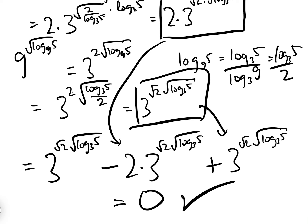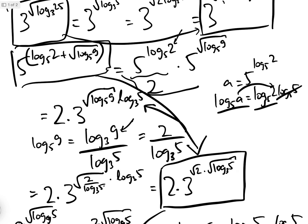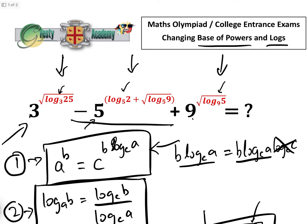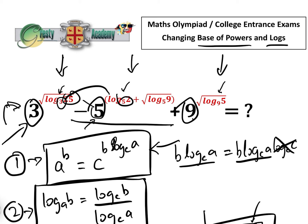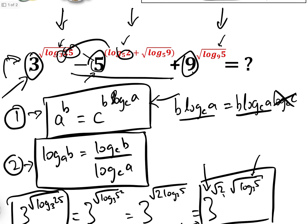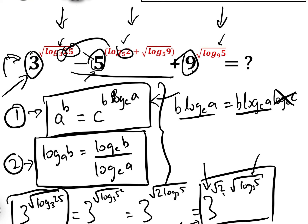This is great practice for logs — changing the base of the log and changing the base of a power. If you see something like this in a maths olympiad, the key insight is to spot that 3 and 9 = 3² are related, and that all logs of different bases need to be unified. Converting everything to base 3 and applying these two formulae does the job — just be very careful. I hope you found this useful; please like the video and subscribe to the Gressy Academy YouTube channel.